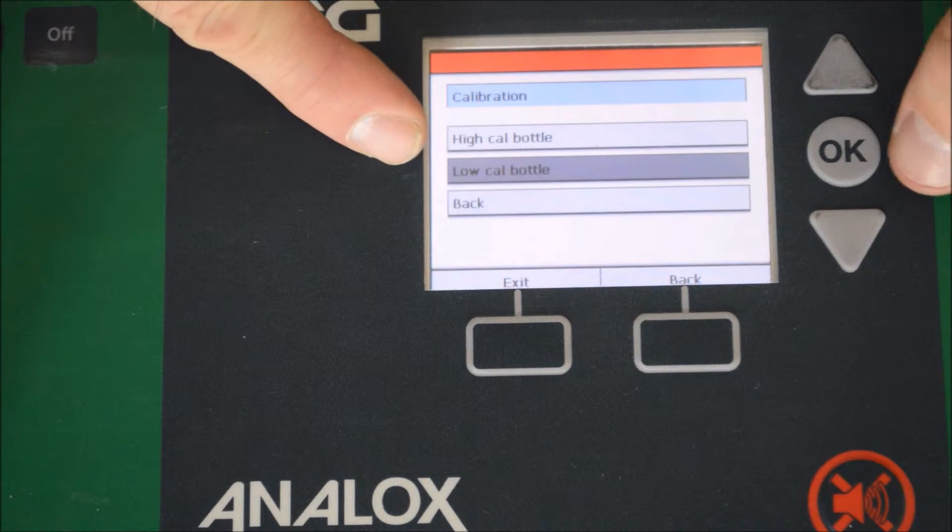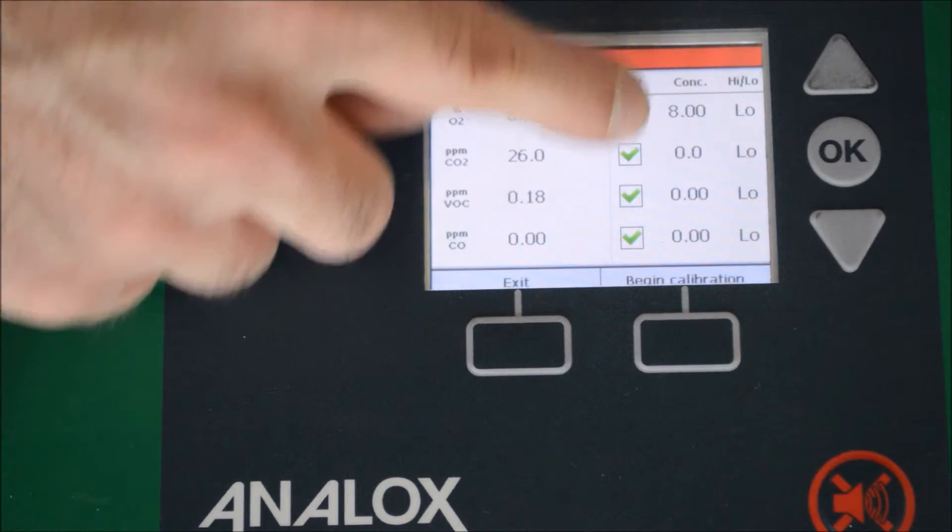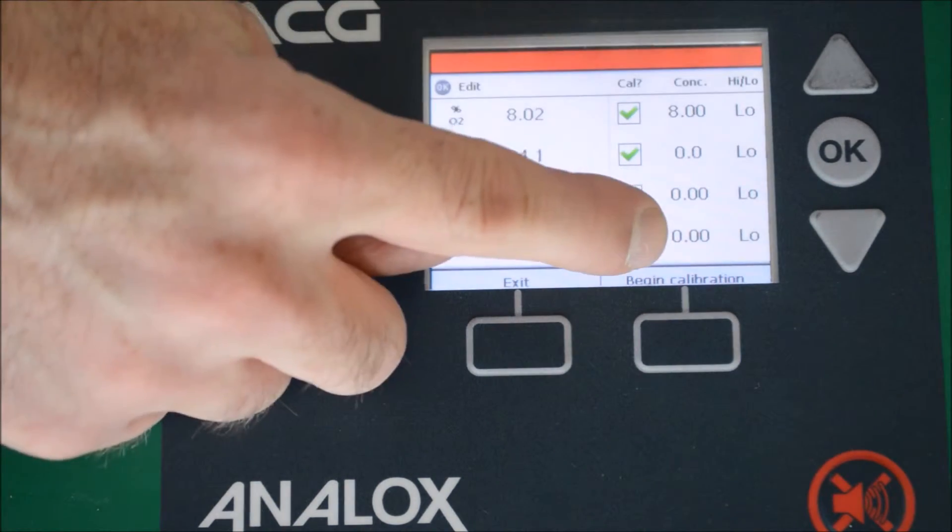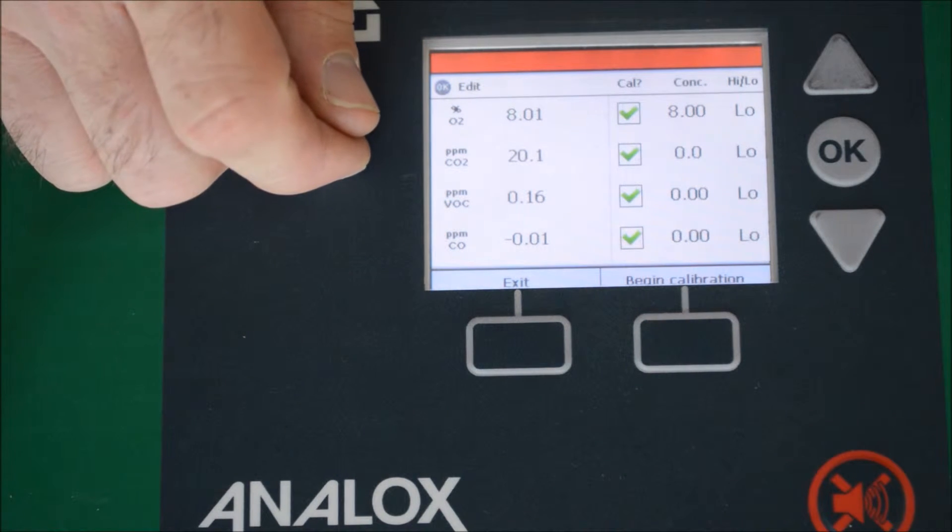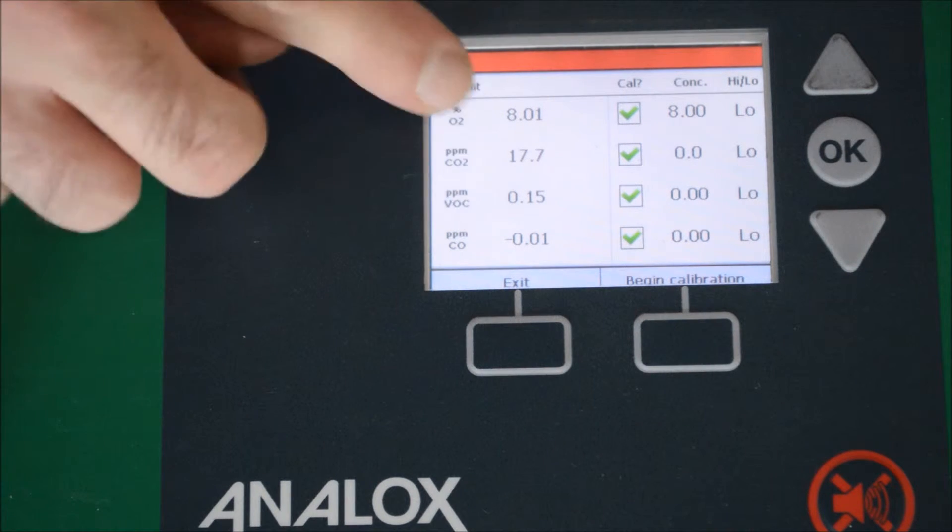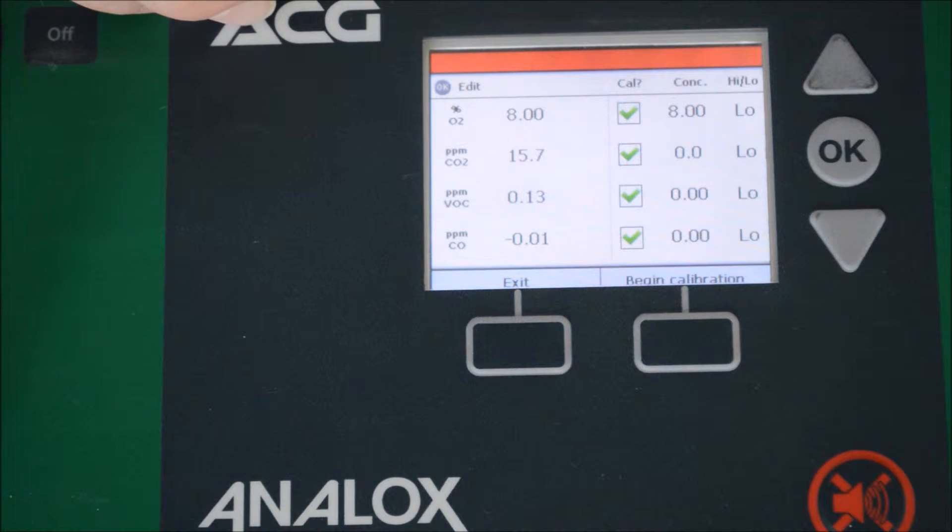We need to check that the calibration concentration, which is on this side, relates to the calibration on our calibration bottle, and these are the live gas readings that we're carrying at the moment. We need to leave the calibration gas running for five minutes to allow all the gas to be purged of the system.